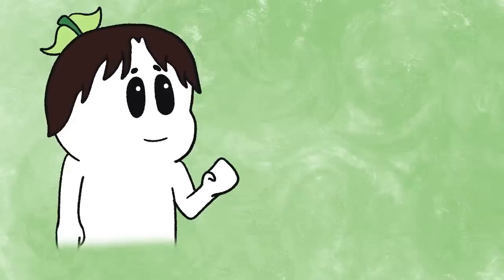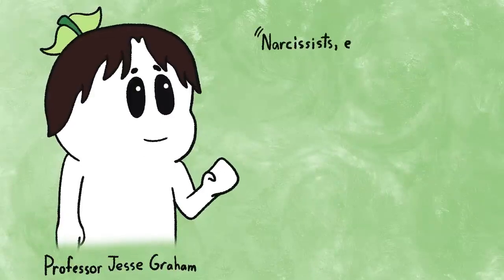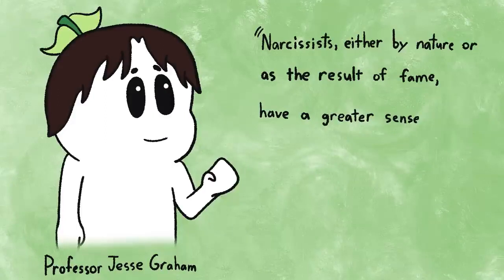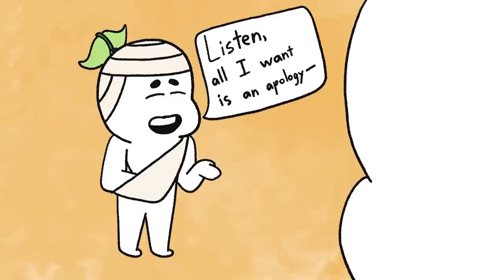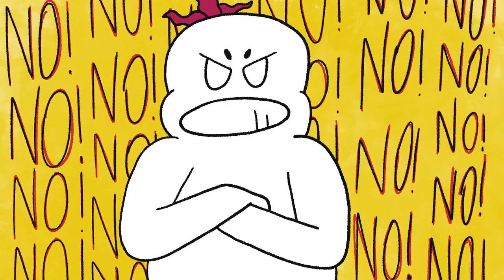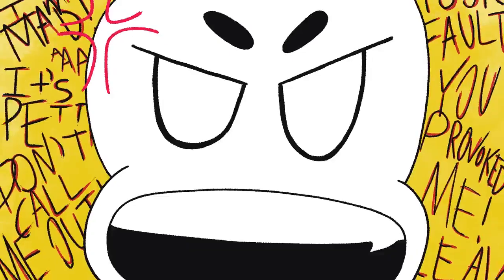In a 2015 study, University of Southern California professor Jesse Graham and colleagues discovered that narcissists either by nature or as the result of fame have a greater sense of entitlement and therefore are more likely to excuse themselves for their failings. So apologizing or owning up to their mistakes? No way. It's not their fault for lying. It's your fault for being so petty and pointing out their lies.